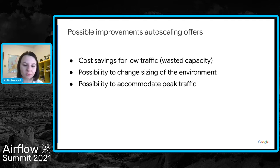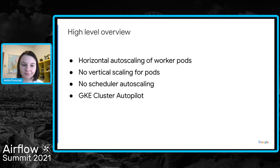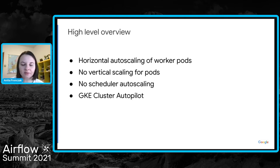It would also be nice to process peak load faster. These are not only problems for Composer users — if you deploy Airflow using this topology on GCP or another cloud provider, you will run into similar problems. Auto scaling generally provides capabilities that let you automatically add or delete compute resources based on increases or decreases in load.